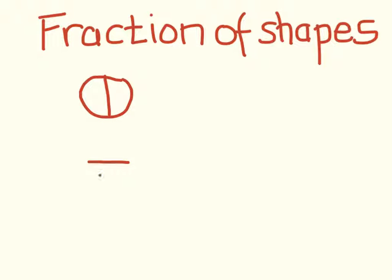Therefore, to write that as a fraction, the total number of parts becomes the denominator. And if we're asked how much of this shape is shaded, we know that the part we're focusing on is the shaded part. Therefore, one of those is shaded, so how much of that shape is shaded? Well, a half is.